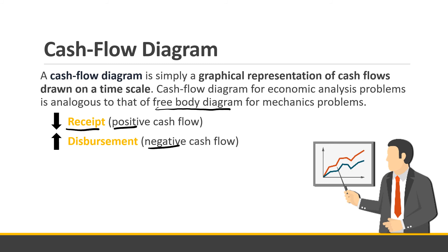Positive cash flow means a receipt — money coming in. Negative cash flow means a disbursement — money going out. The convention used here: a receipt is shown as a downward arrow (money coming into your pocket) and a disbursement is shown as an upward arrow (money going out of your pocket).